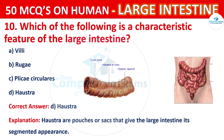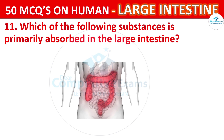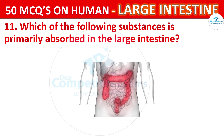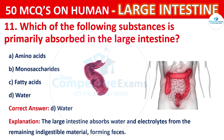Question number 11. Which of the following substances is primarily absorbed in the large intestine? Your options are: Amino acids, Monosaccharides, Fatty acids, or Water. The correct answer is D, that is Water. The large intestine absorbs water and electrolytes from the remaining indigestible material, forming feces.